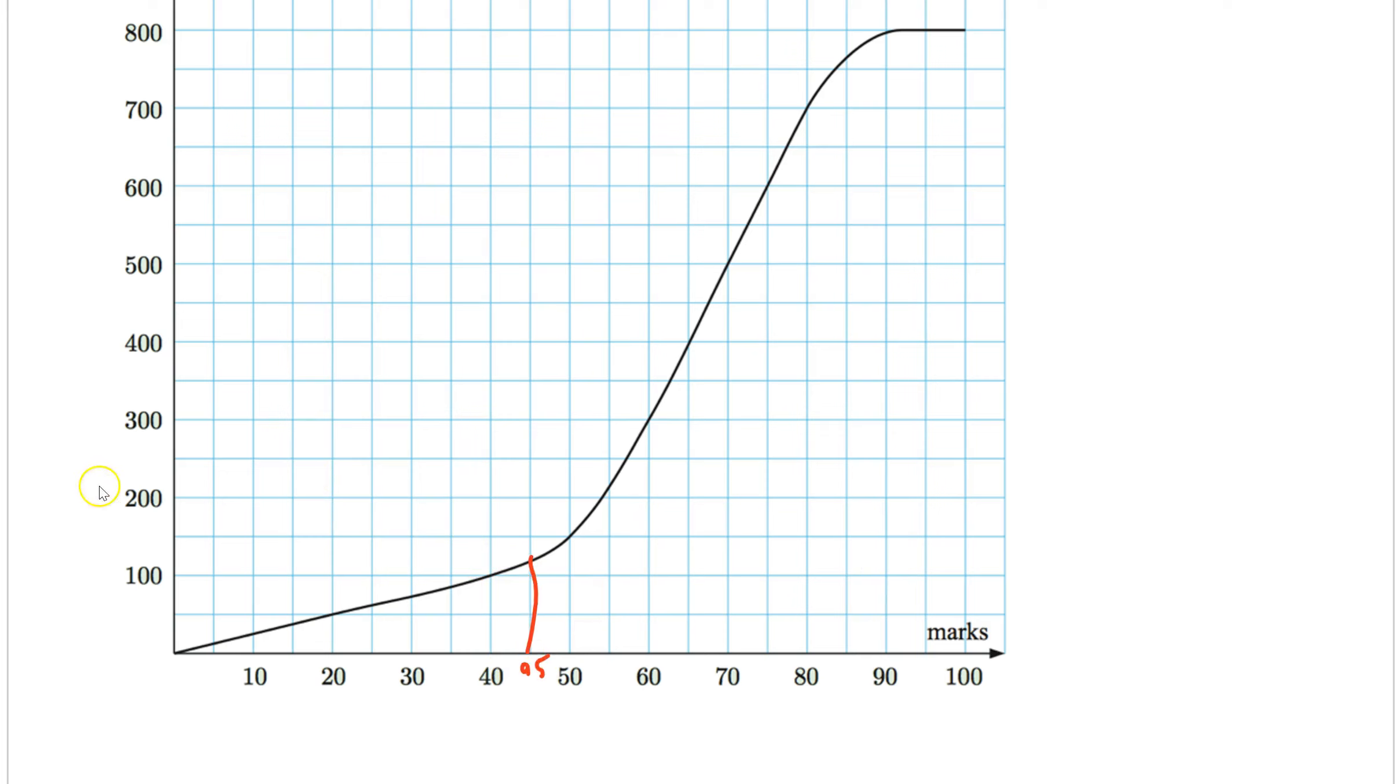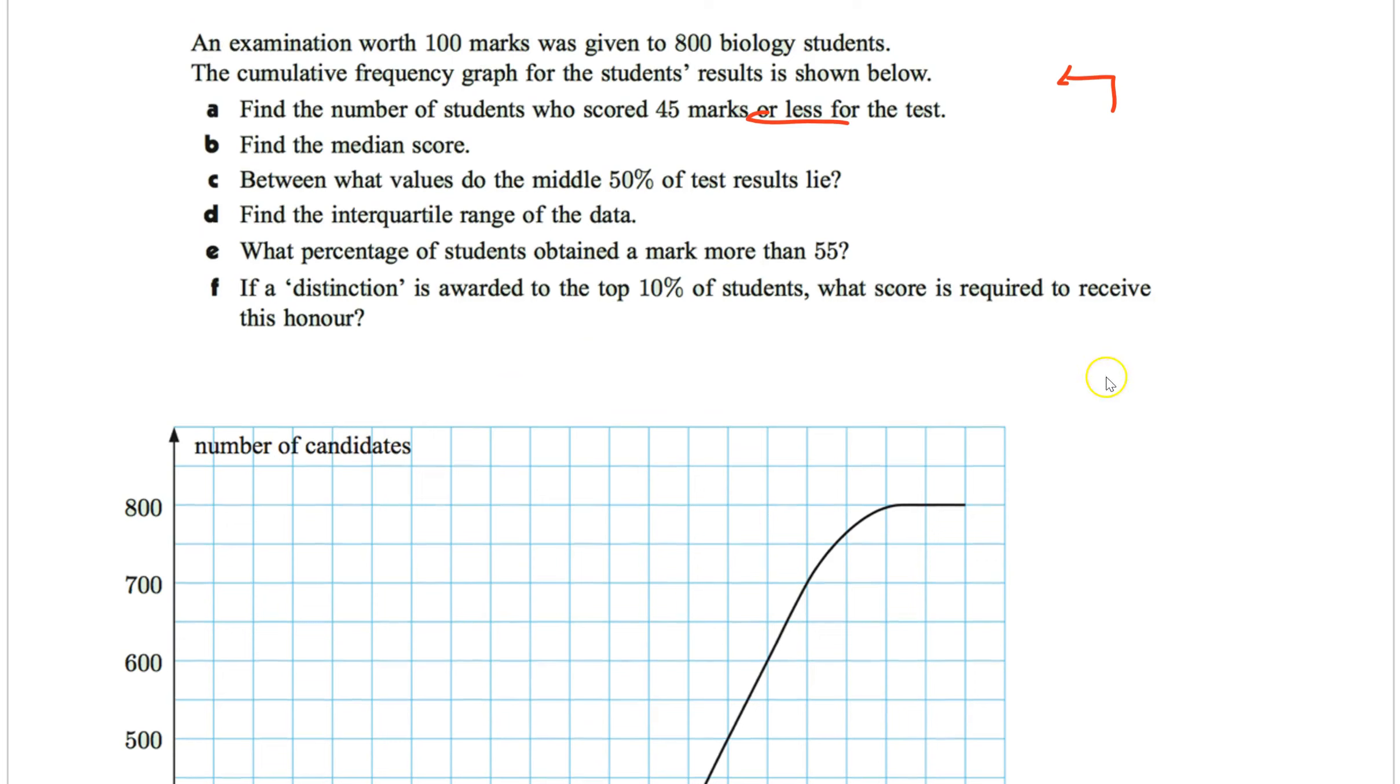So 45 marks or less. Here's 40, here's marks. Here's 40, here's 50. So 45 is around there. Go up and across. So it looks like I'm going to say about 110. So that's how many people scored less than 45 marks.